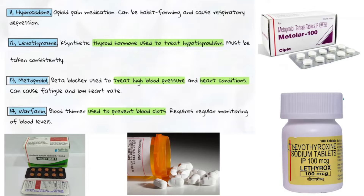13. Metoprolol — a beta-blocker used to treat high blood pressure and heart conditions. Can cause fatigue and low heart rate. 14. Warfarin — a blood thinner used to prevent blood clots. Requires regular monitoring of blood levels.